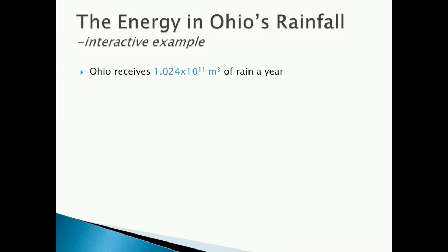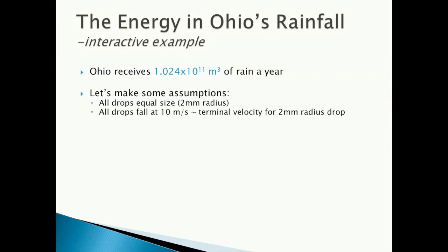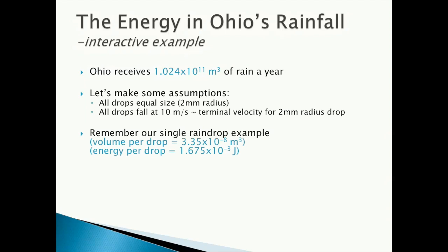Looking online, you can find that Ohio receives an average of 1.024 times 10 to the 11 cubic meters of rain per year on average. To go any further, we need to make some assumptions. Let's assume that all drops are equal size, and let's keep the 2 millimeter radius we used from the previous example. We'll also assume again that the drops fall at 10 meters per second.